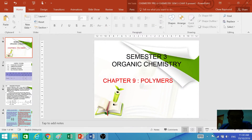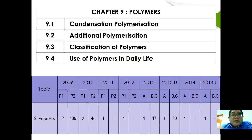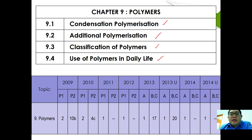We are at the final chapter for Semester 3 of STPM where we're going to learn about polymer. The content of this chapter includes condensation polymerization, additional polymerization, classifications of polymers, and uses of polymer in our daily life. The table below shows the past-year question analysis, so hopefully you know this is also a rather important chapter for STPM chemistry.